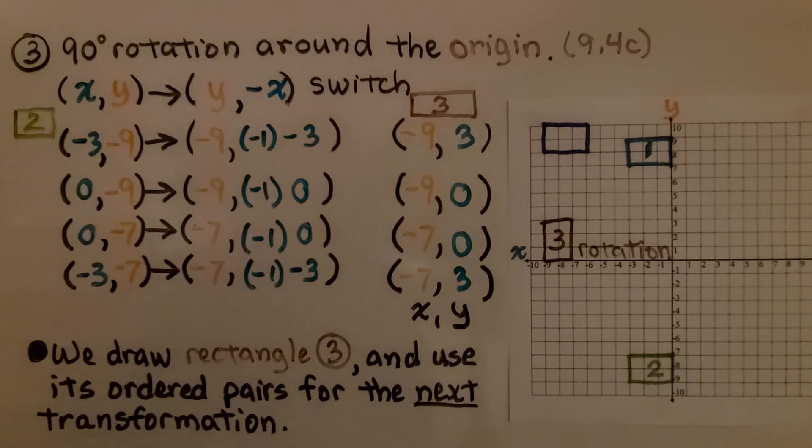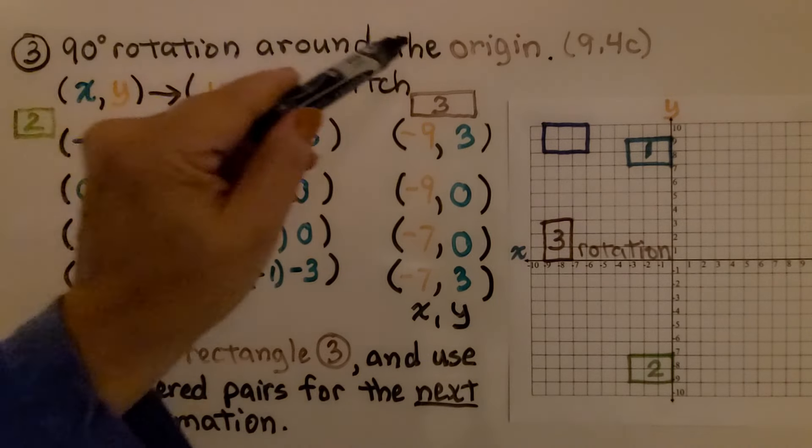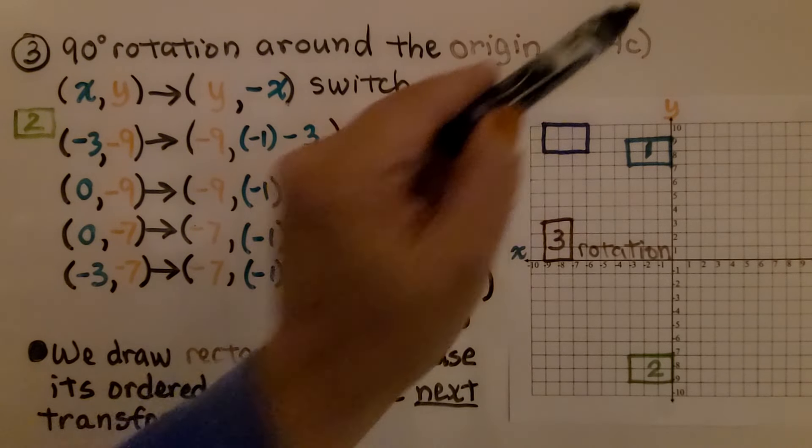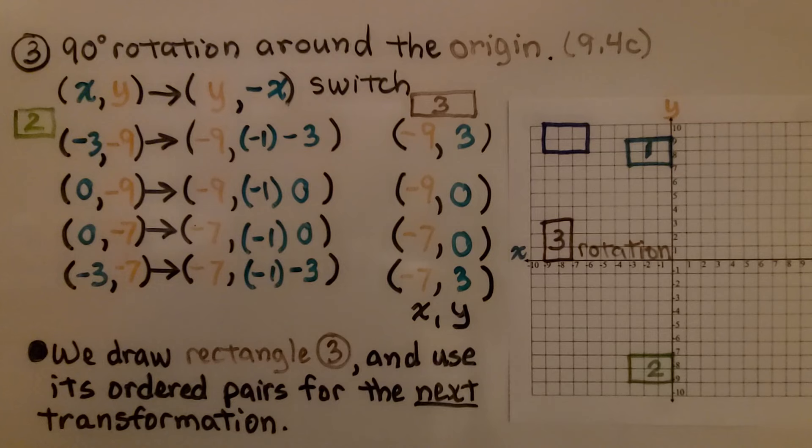The third transformation in the sequence, number 3, was a 90-degree rotation around the origin. This is a positive number. It's not negative 90 degrees. It's positive 90 degrees, so we know it's clockwise. If you don't remember about rotations, that video 9.4c is also linked in the description.